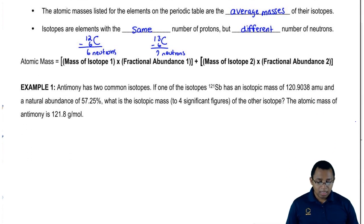Here we can find out the atomic mass of an element based on the masses of its isotopes. We're going to say that the atomic mass or average mass that we see on the periodic table is equal to the mass of isotope 1 times the fractional abundance of isotope 1.